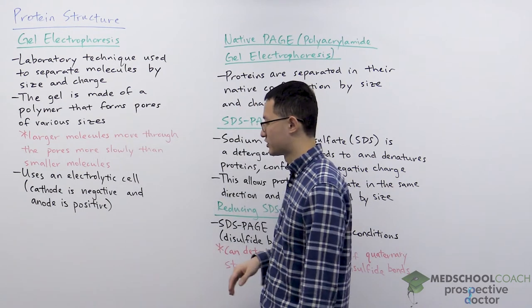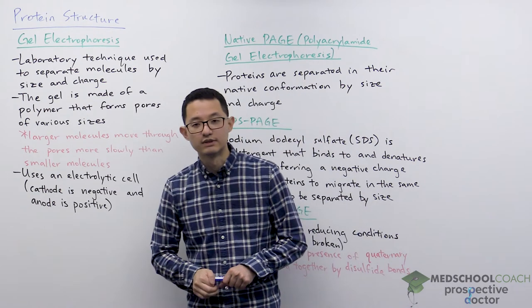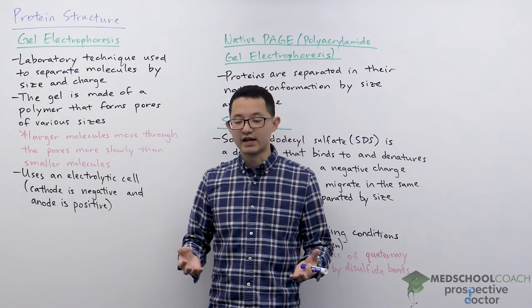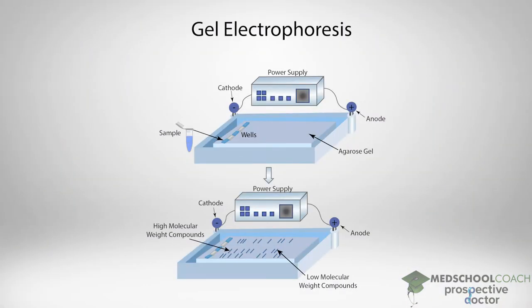The second part of separating by charge is that gel electrophoresis uses an electrolytic cell. Looking at this diagram you can see the setup — on one end it's positive and the other end is negative. The negative end is the cathode and the positive end is the anode. When the gel is placed inside this electrophoretic chamber you can see there are wells on one end of the gel. The samples are added to these wells, then the machine is turned on and molecules migrate through the gel according to their size and charge.